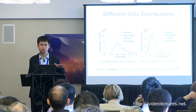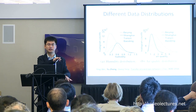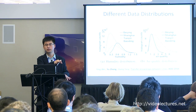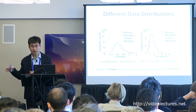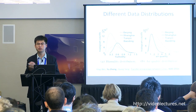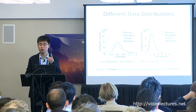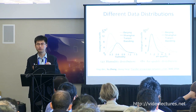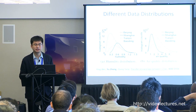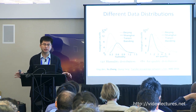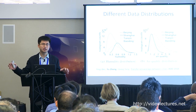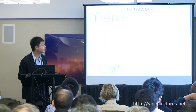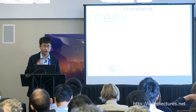We think we can transfer the knowledge of relationships between different types of data. For example, when there is traffic congestion, air quality tends to be bad — such relationships may hold across different cities even if the data distributions are very different. Second, we need to project data from different cities into a common space where they share the same representation.